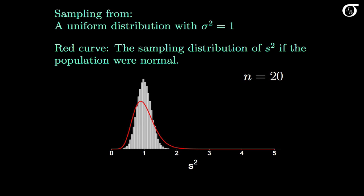And for a sample size of 100, we see a similar effect. The sampling distribution of s squared is looking roughly normal, and tightly grouped about the true variance of 1.